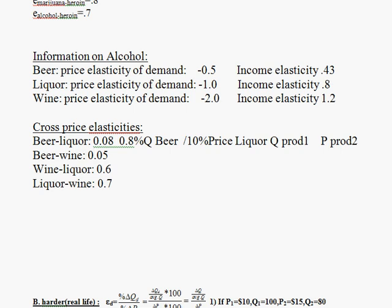Similarly, with beer and wine, when the price of wine goes up there's not a big response in the quantity of beer. This tells us that people who drink wine, when its price goes up, don't look to beer as a close substitute — the elasticity is even smaller at 0.05, a very small reaction in the quantity of beer.